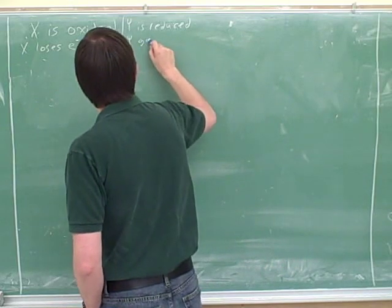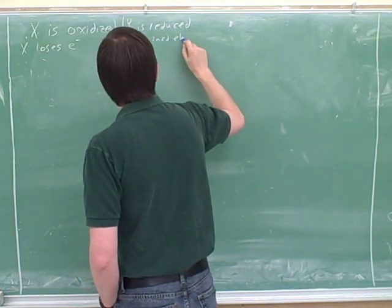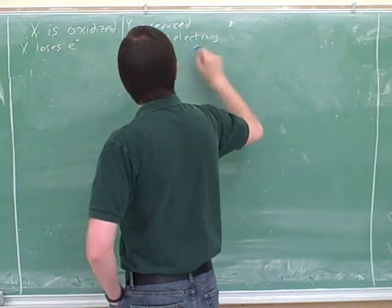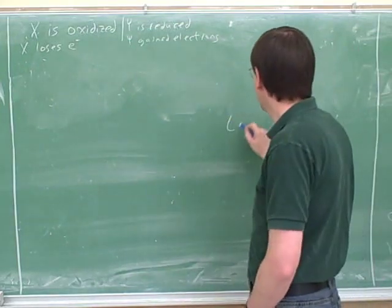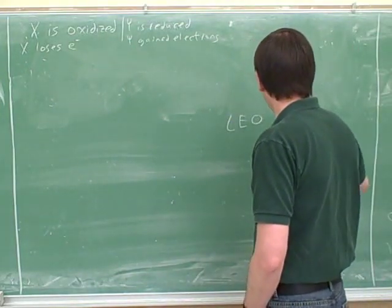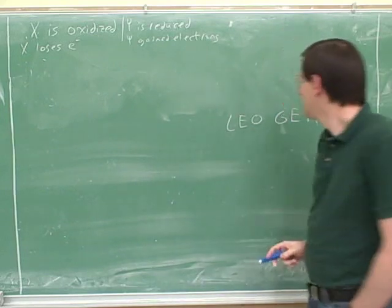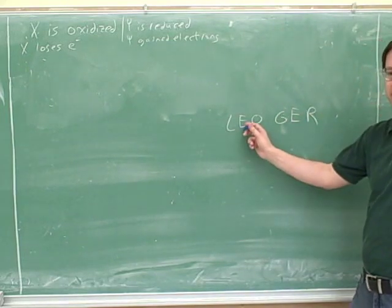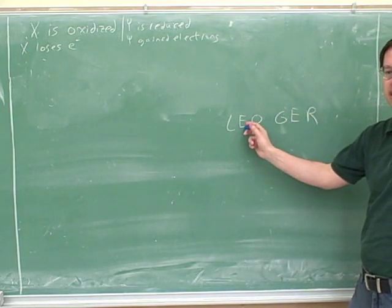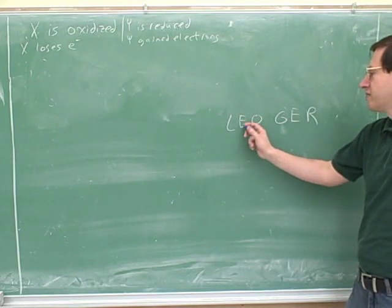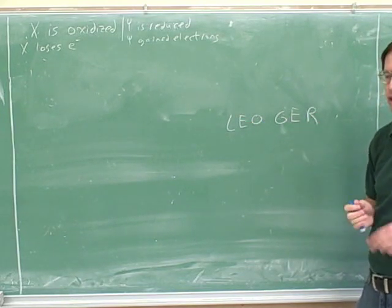How do you remember that? The other one, yeah. Okay, good. I think that is the best mnemonic. So what does this stand for? Losing electrons, oxidation. Yeah. Loss of electrons is oxidation and gain of electrons is reduction.